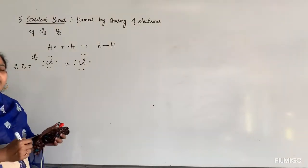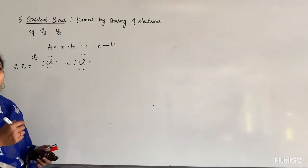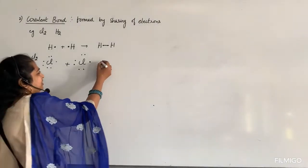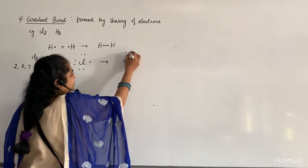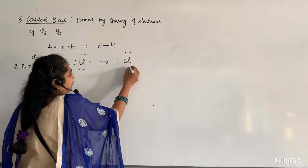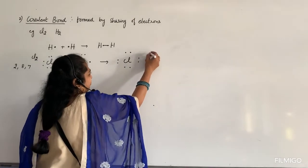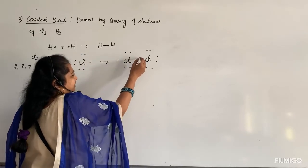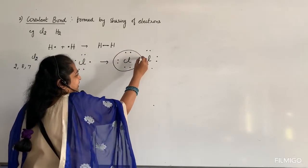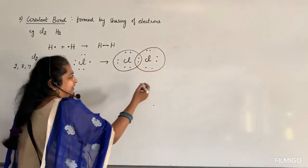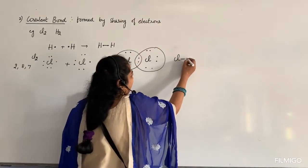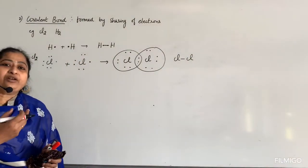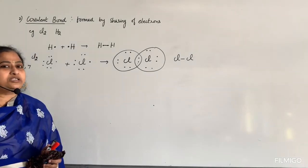When one electron is shared between two atoms, you get a single bond — as in Cl2. Covalent bonds can be single, double, or triple bonds. If two electrons are shared, you get a double bond. For example, oxygen has atomic number 8 with configuration 1s², 2s², 2p⁴ — giving 6 valence electrons. Two oxygen atoms each need 2 more electrons, so they share 2 electrons and form a double bond: O=O.